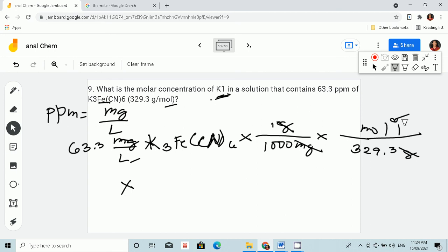So let's times. This is K3Fe(CN)6, potassium ferricyanide. So we have in one mole of potassium ferricyanide...